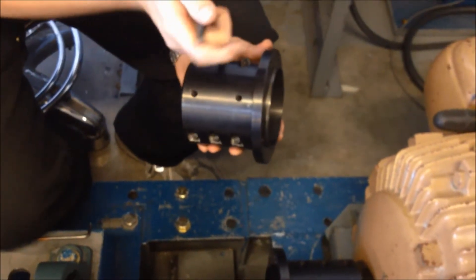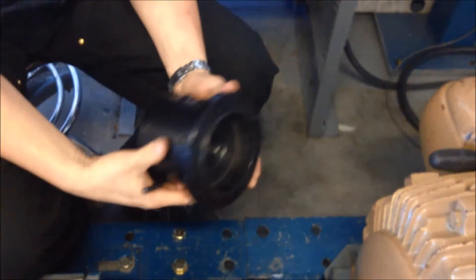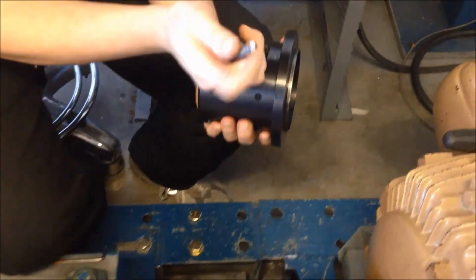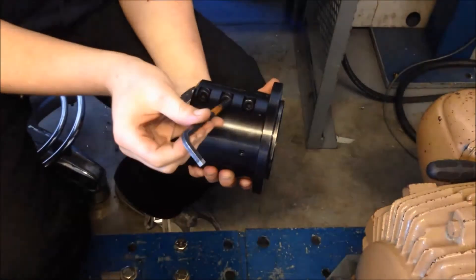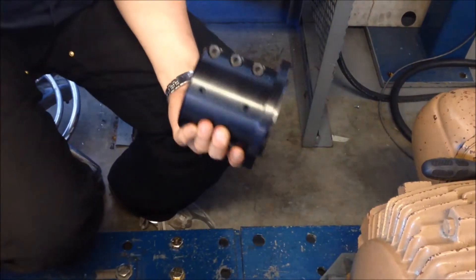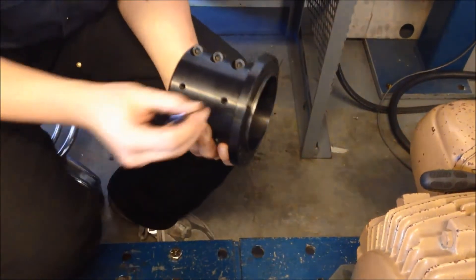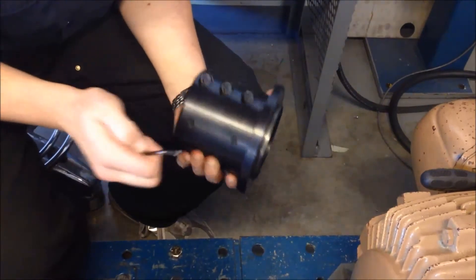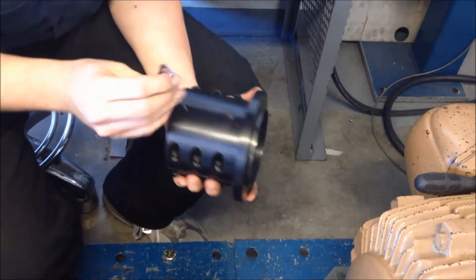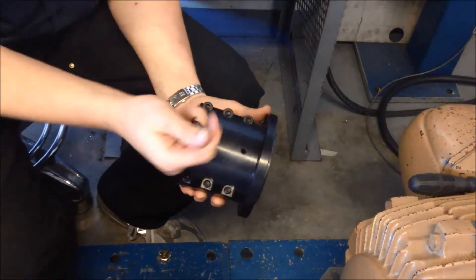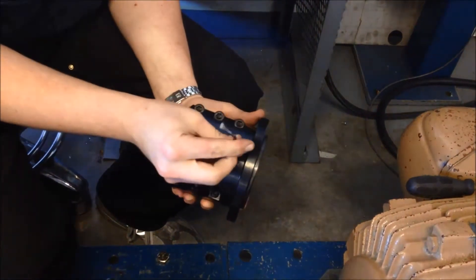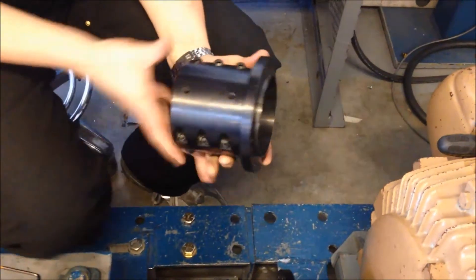Perform the same procedure for the load hub. Loosen all six clamp bolts and the four set screws on either side of the hub. Install the load hub onto the load shaft. Again, ensure that the hub slides freely onto the load shaft. Remove any burrs or defects that may prevent it from sliding freely.